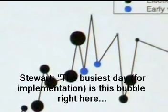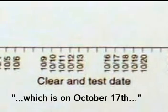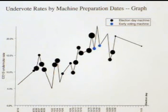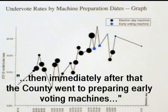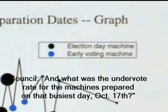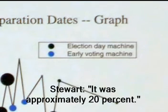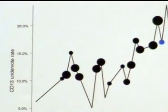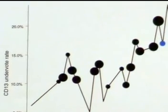The busiest day is this bubble right here that I'm pointing to, which is on October 17th. What this graph also helps to illustrate is how that was also the very last day on which a long series of Election Day machines were prepared. Immediately after that, the county went into preparing early-vote machines. Professor, is the relationship between the under-vote rate and the date on which the machines were prepared statistically significant?